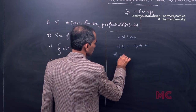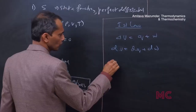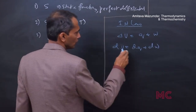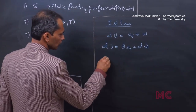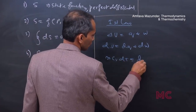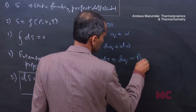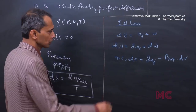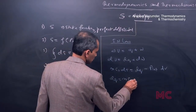For a certain change, dU equals dQ plus dW. Here dU equals nCᵥdT, and dW equals minus P_internal dV, since P_external converts to P_internal. So we can write dQ equals nCᵥdT plus P_internal dV.